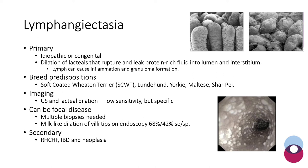Secondary lymphangiectasia can be really difficult to differentiate from primary, because if primary lymphangiectasia causes inflammation noted on biopsies, then secondary lymphangiectasia — for example due to inflammatory bowel disease — may look very similar. Other causes of secondary lymphangiectasia include right-sided heart failure and also neoplasia.